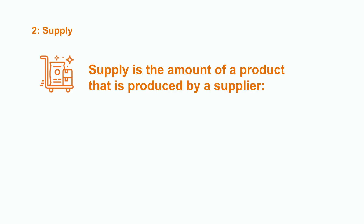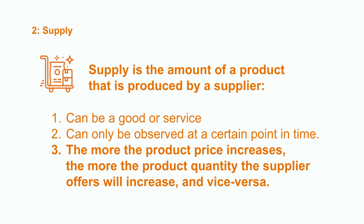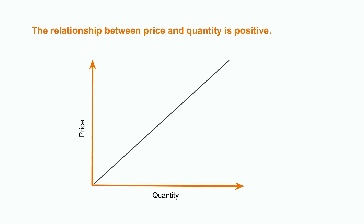Supply is the amount of a product that is produced by a supplier. It can be a good or a service, and it can only be observed at a certain point in time. The more the price of a product increases, the more quantity of this product the supplier offers, and vice versa. This allows the producer to maximize its profits.